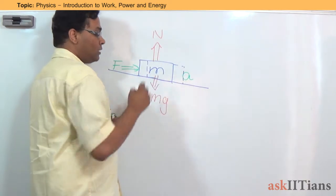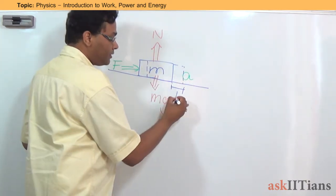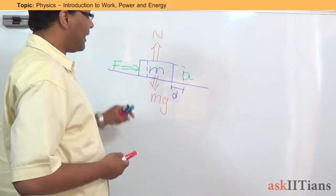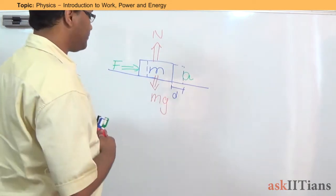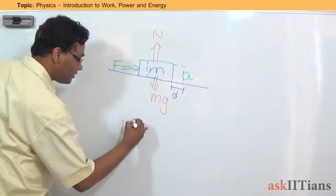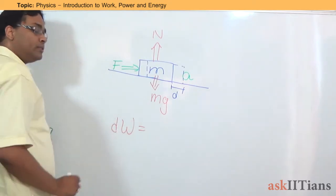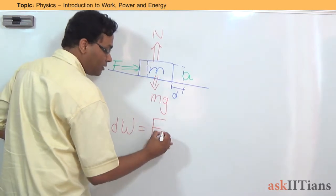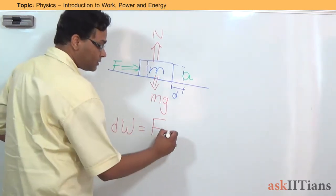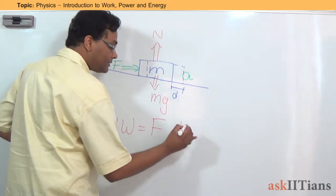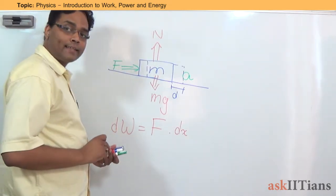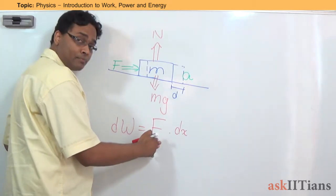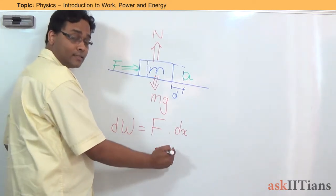Let's assume this is the distance moved by the body on the application of the force. On the application of the force, the body moves by a distance — let's say D or Dx. In that case, dW is some amount of work that is going to be produced when, on the application of a constant force, the body moves by a distance Dx. So dW is the work produced when a force F is applied and the body covers a distance Dx.